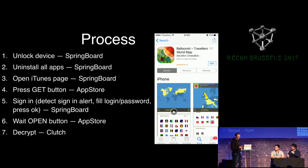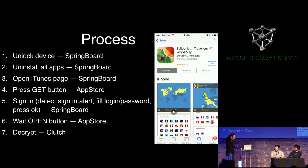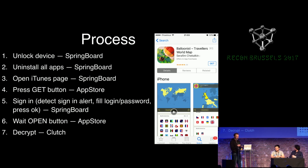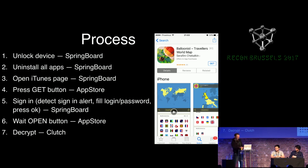First of all, our tool unlocks the device. Then it uninstalls all apps to make space, and then opens an iTunes page with the target application. At this page, we need to press the Get button. After that, the App Store will ask us to sign in, there will be an alert, and we need to fill in our login and password and press OK. Then the download will start, and we wait until the Get button becomes an Open button, meaning the application was downloaded and we can proceed to the final step and decrypt it with Clutch. Now let me just show you how it's done.